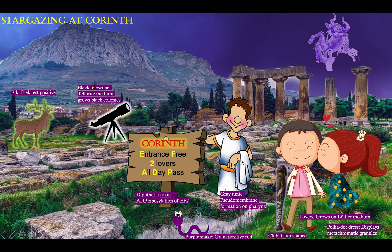Our Roman here is draped with a gray tunic, and that's to remind you that diphtheria includes a pseudomembrane — a gray pseudomembrane — which forms on the pharynx.